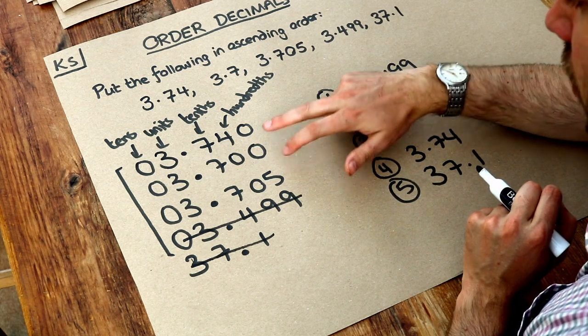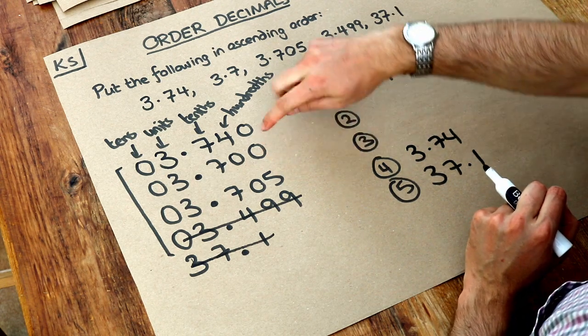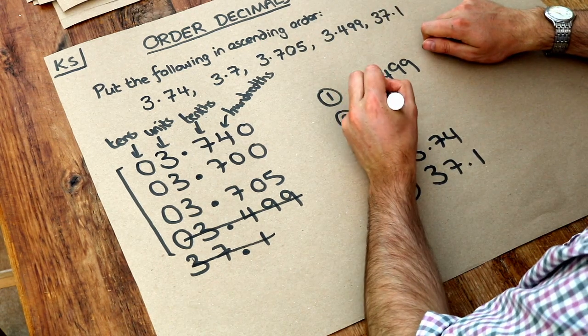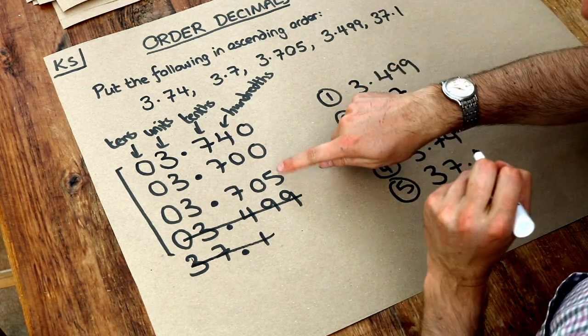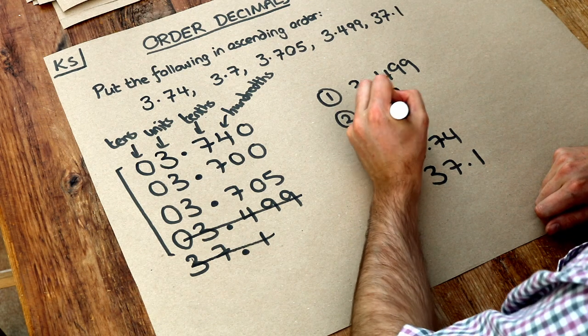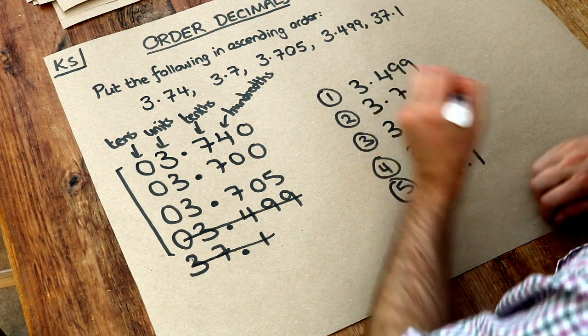So which one is smaller, the zero or the five? The zero is smaller so that one is going to be the next smallest, and then it must be 3.705 next.